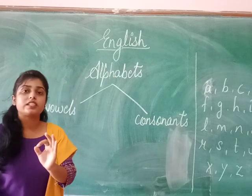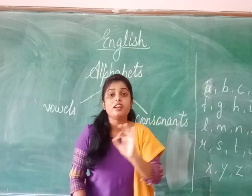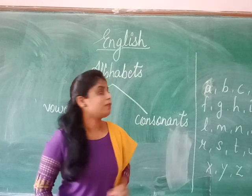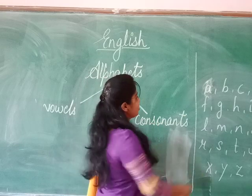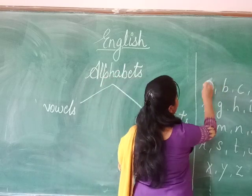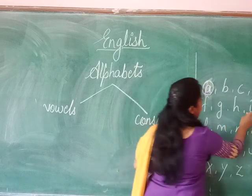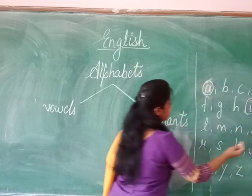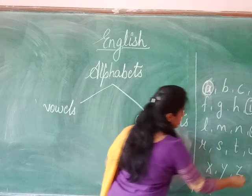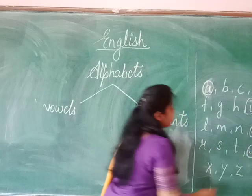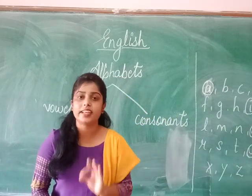What are vowels? There are only five vowels. I am circling all the vowels — pay attention on them. The letter A is a vowel. The letter E is a vowel. The letter I is a vowel. The letter O is a vowel. And the letter U is a vowel. So there are basically five vowels in the English alphabet.